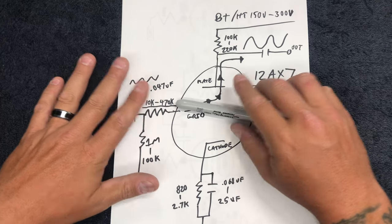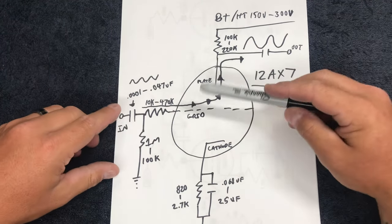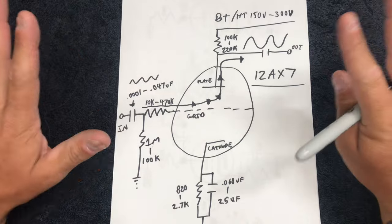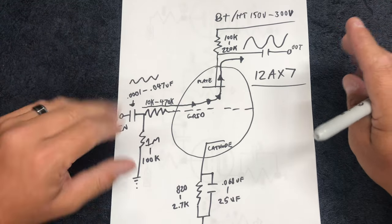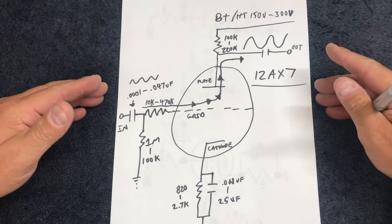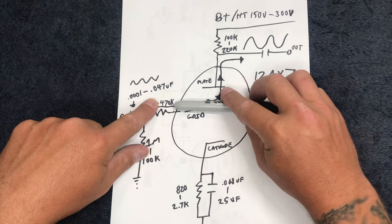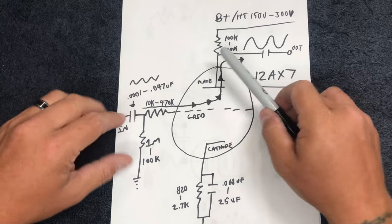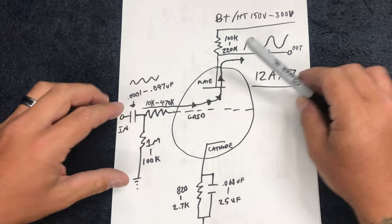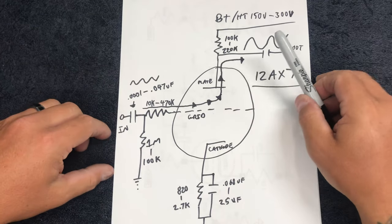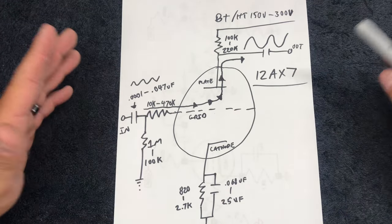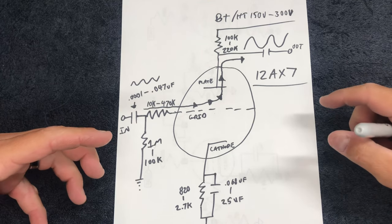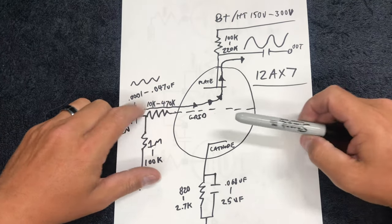As you go higher in value, it has two other purposes. One is to limit or eliminate blocking distortion - you can find all the information you want about blocking distortion on other YouTube channels. All you need to know is it's not good, sounds bad, you don't want it. The secondary function of something with a high value is to also control the amount of high end that the tube will amplify - it will actually start to mute or reduce some of the high frequencies. This is good if you're having several of these stages in a row, as you get a lot of harmonic buildup and can get a little grittiness, glassiness, or fizziness - using grid stoppers with high values can help tame some of that down.